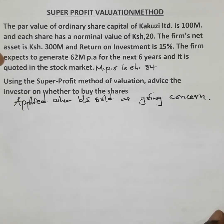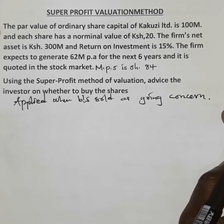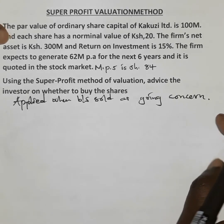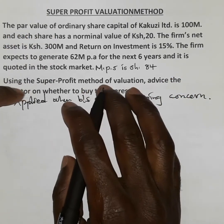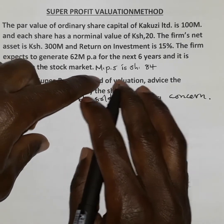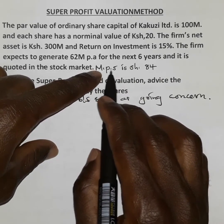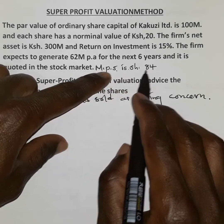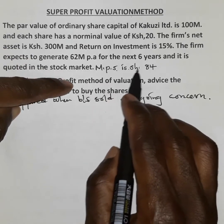When a business is being sold, investors normally make the decision whether to buy the shares in the market or not. They will only make the right decision when they compare the intrinsic value of the shares with the value of the shares trading in the market. In this case, the market price per share is 84 shillings, so we are going to get the intrinsic value — that is the present value — and compare it with this.